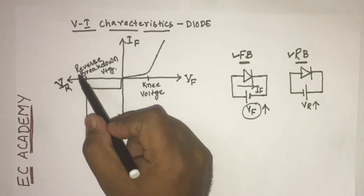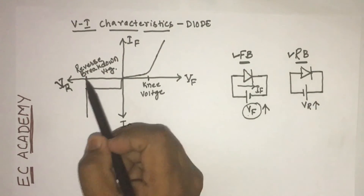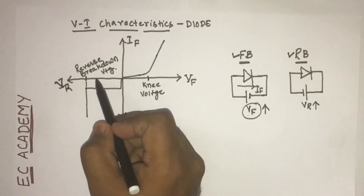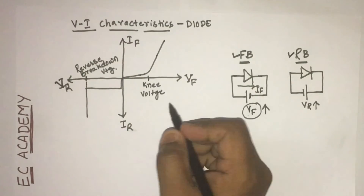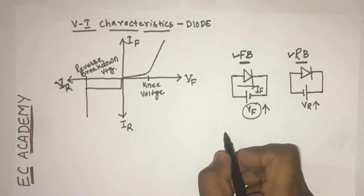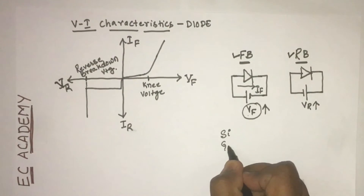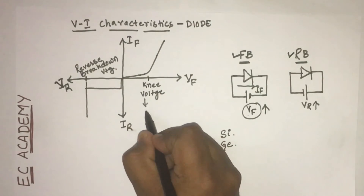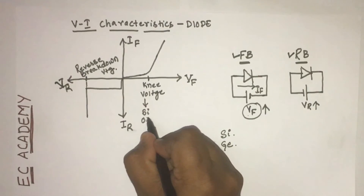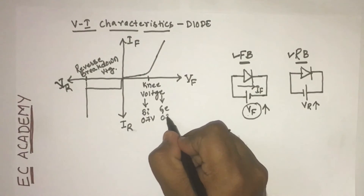The reverse breakdown voltage is the maximum voltage that can be applied to the diode when the diode is connected in reverse bias condition. The diode can be of two types: a silicon diode or a germanium diode, depending upon the type of semiconducting material used. The knee voltage for silicon diode is 0.7 volts and for germanium diode is 0.3 volts.